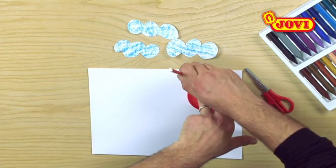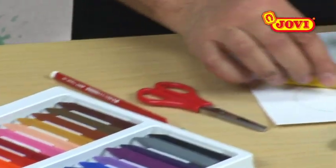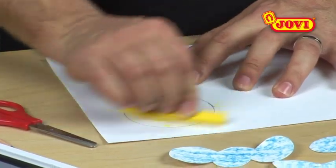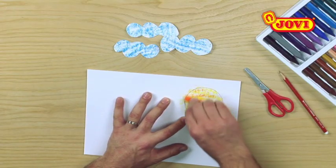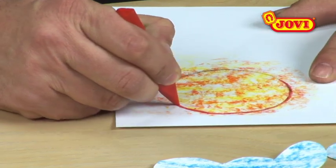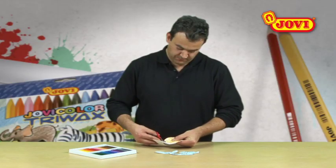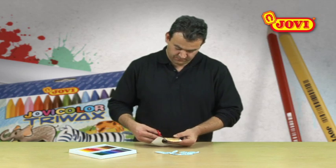To draw the sun, we draw around a tin lid in pencil. Then colour it in with wax crayons, like the clouds, but this time combining yellow, orange and red. We now use the red wax crayon to go over the outline of the sun and cut it out.